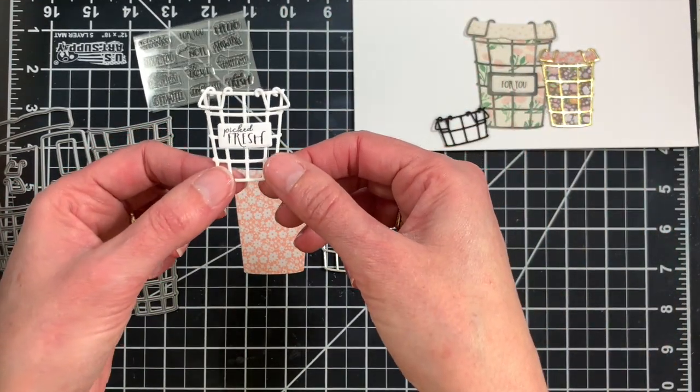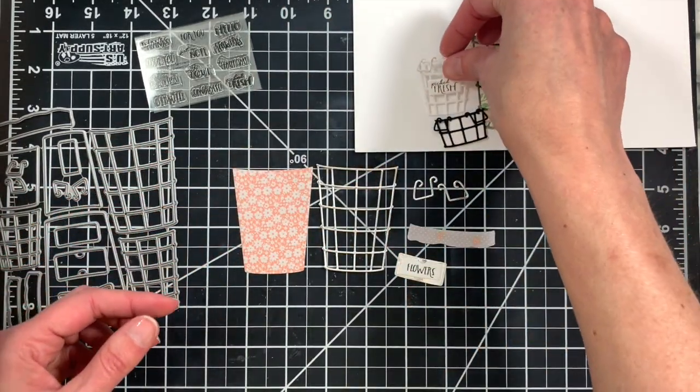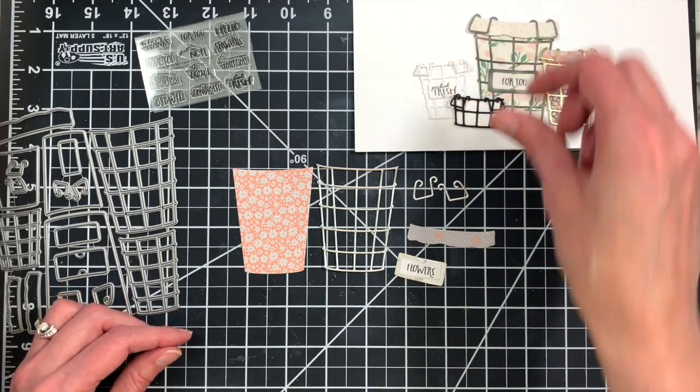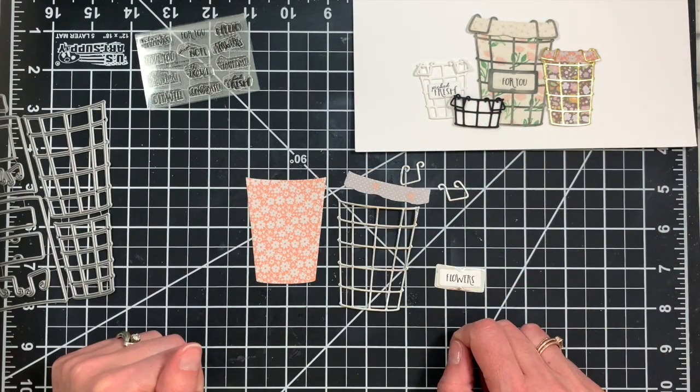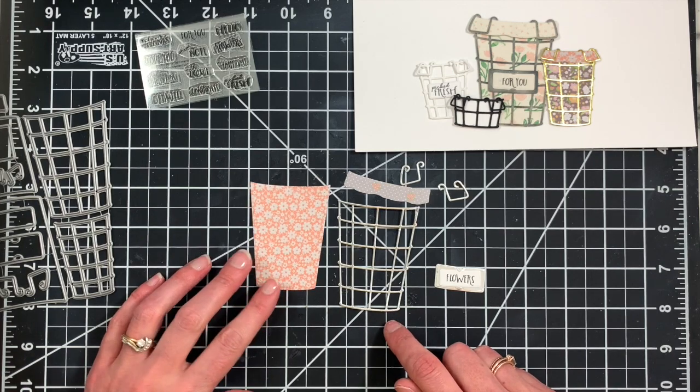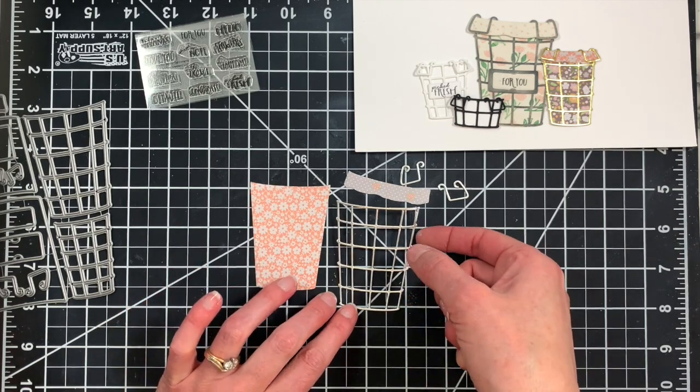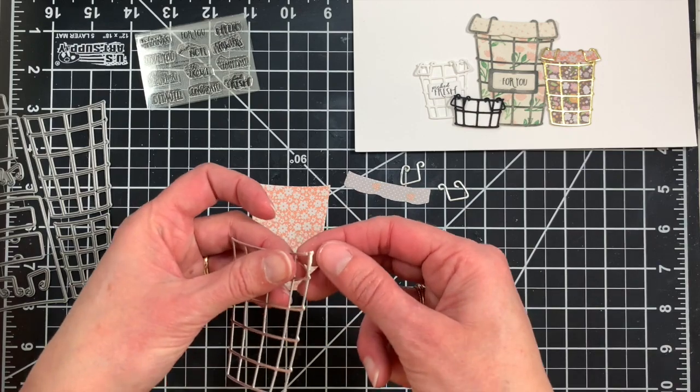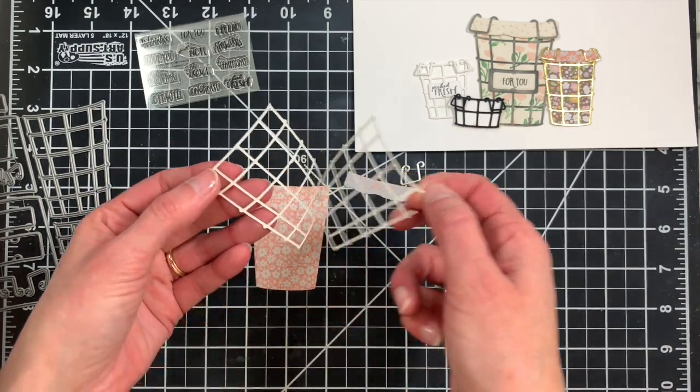All of the sentiments from the market basket sentiment set do fit on that label as well. So let's go ahead and assemble one of these cute baskets. I already have all my parts and pieces die cut. I have die cut the wire portion of the basket from some adhesive backed metallic paper. I have silver here.